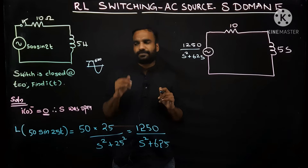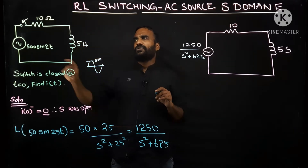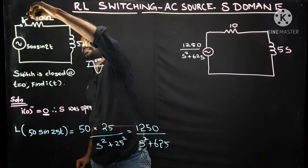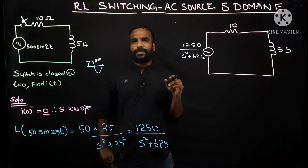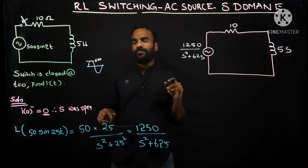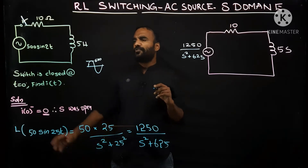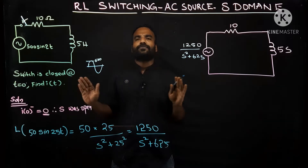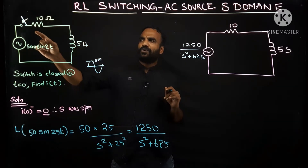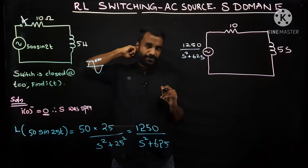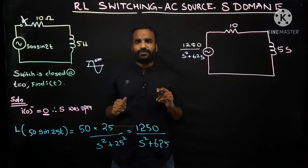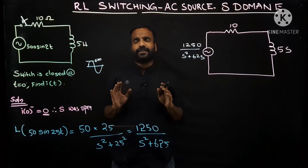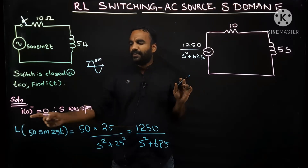Initially we are considering an RL circuit. The question is: switch S is closed at t = 0, find i(t). Initially the switch is open. Since the switch was open up to the moment t = 0, the inductor is carrying no current — it is not in steady state. So i(0⁻) = 0.